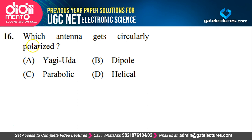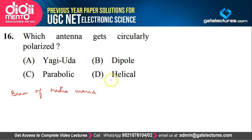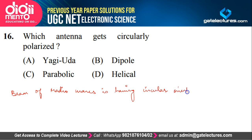Question 16 is asking about antennas — specifically, which antenna gets circularly polarized. There are two types of polarizations studied in antennas: linear polarization and circular polarization. In circular polarization, the beam of radio waves has a circular orientation along the antenna axis.